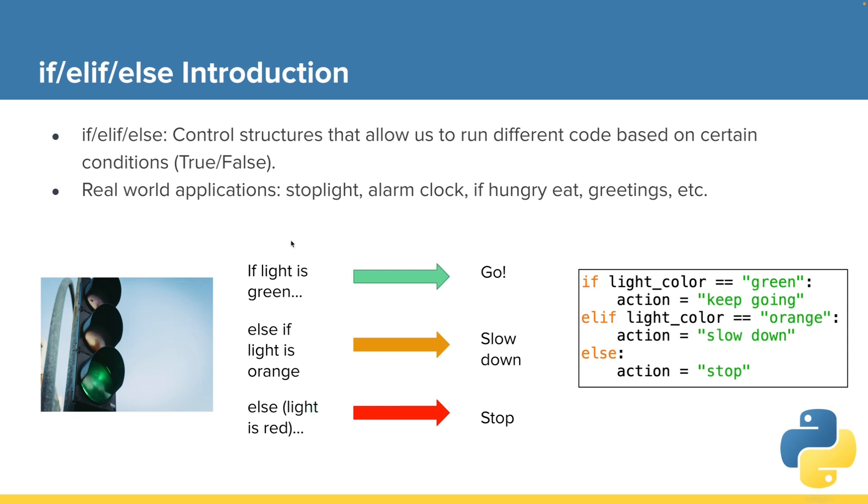We could map this out in Python, and we could say if the light is green, go. Otherwise, or else, if the light is orange, slow down.